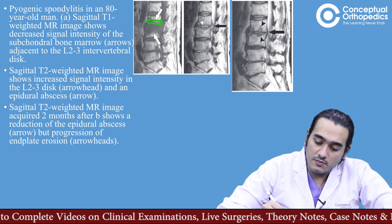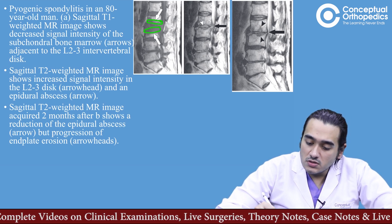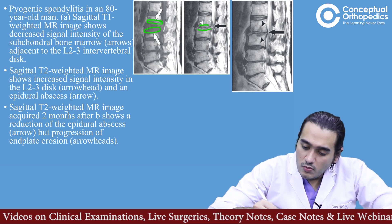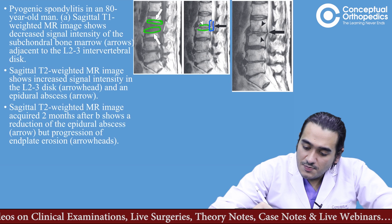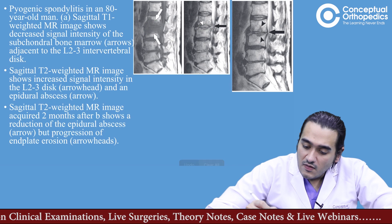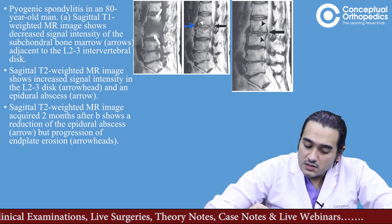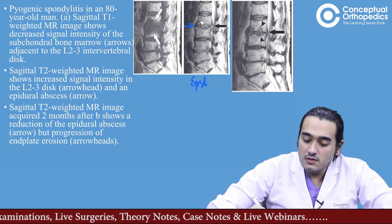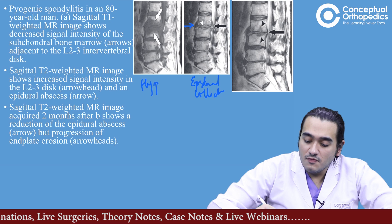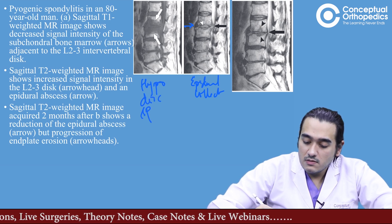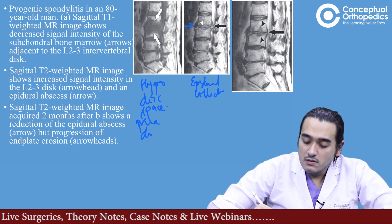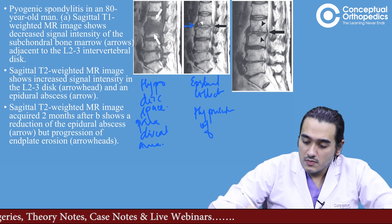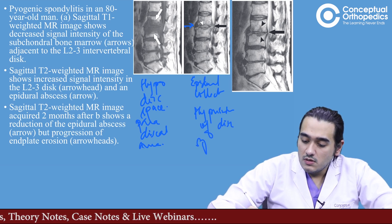When we look at the T2 image, it shows some amount of end plate changes. If you look closely, there is an epidural collection. One other important thing: if you compare this affected disc space with others, it looks hyperintense — more white. So whenever you have a picture showing epidural collection with hypointensity of the paradiscal area along with hyperintensity of the disc space on T2, this is an indicator that we are dealing with infection.